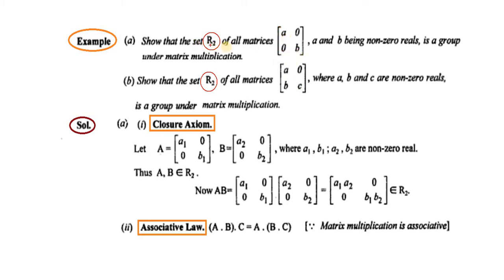So humnye check kerna hai ke the set of all diagonal matrices under matrix multiplication is a group. Aur niche wali example mein humnye check kerna hai to prove that the set of all lower triangular matrices under matrix multiplication is a group. Yahan diagonal matrices hai, or yahan lower triangular matrices hai.